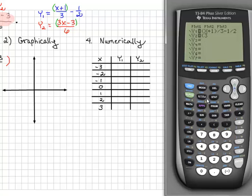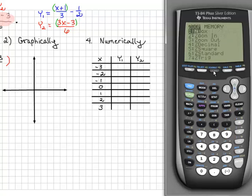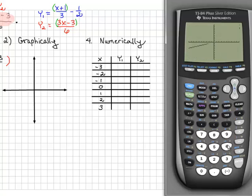Then enter y2 is equal to the quantity 3x minus 3 over 6. Once you've entered the equations, you want a good viewing window, so go to zoom and select zoom 6, which is the standard viewing window. It goes from negative 10 to 10 along the x-axis and negative 10 to 10 along the y-axis.